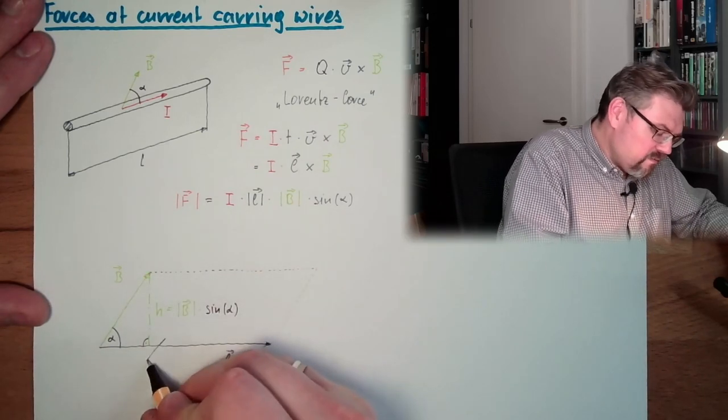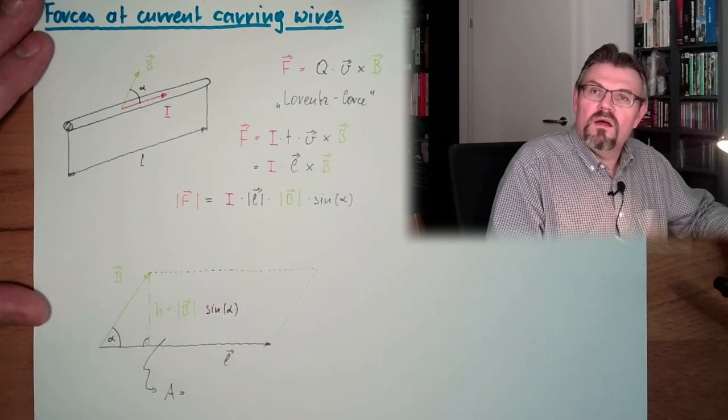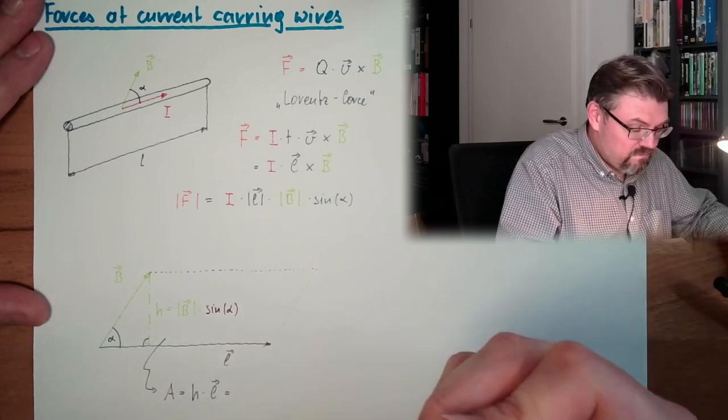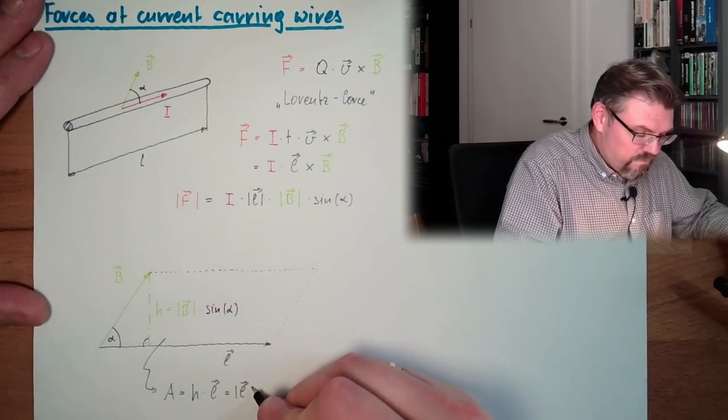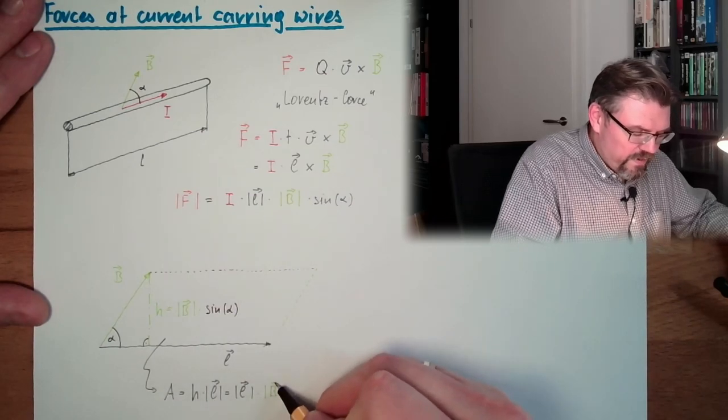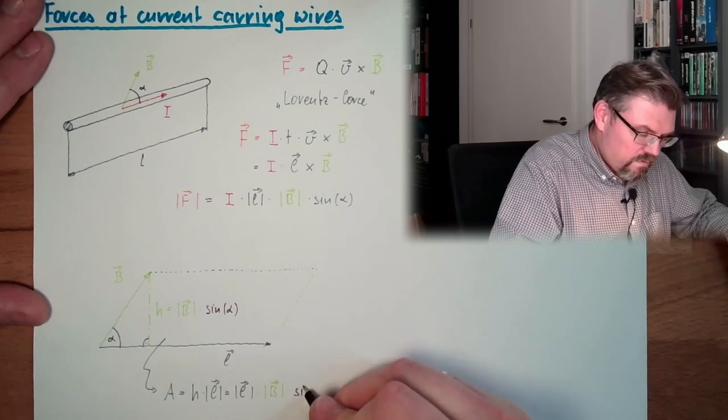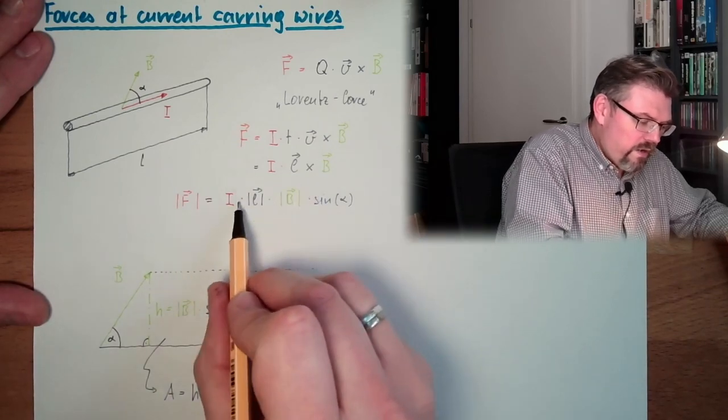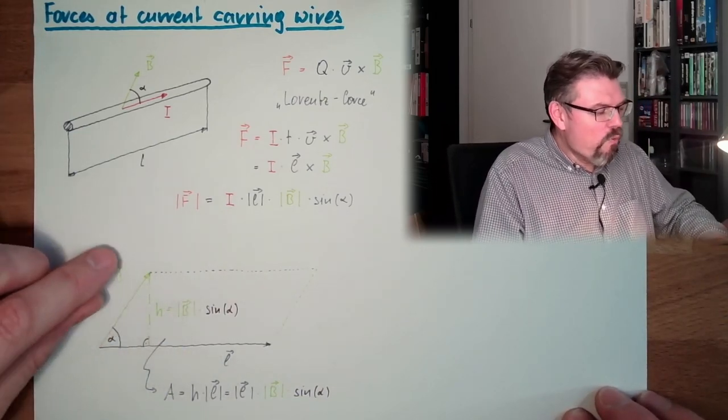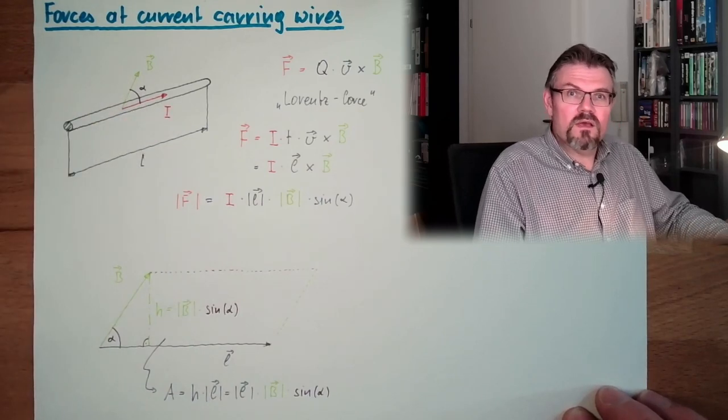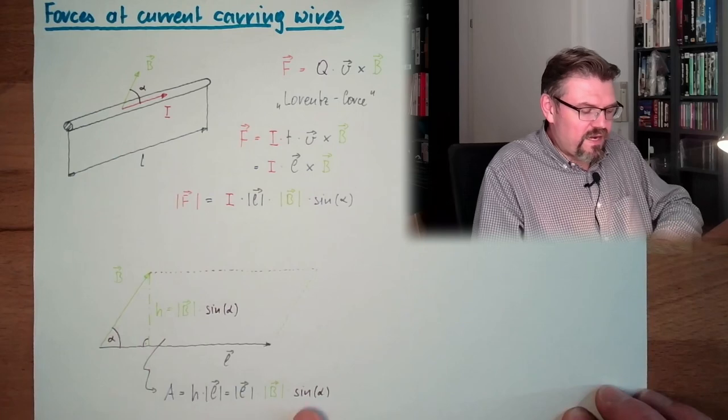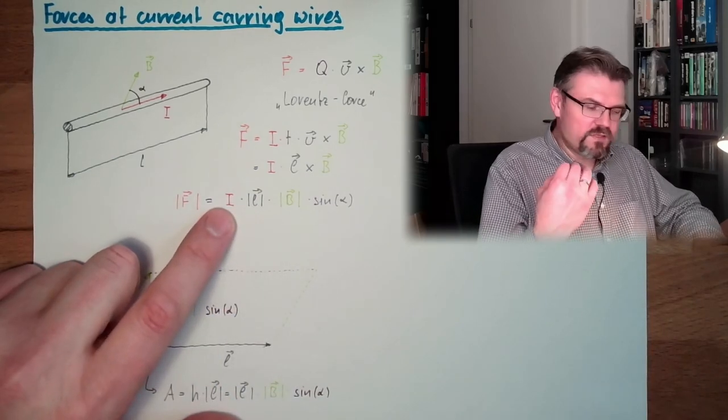So this is just true. And how long is this? This is the absolute value of L. So our area of our parallelogram is h multiplied by L. And this is L, actually it's the absolute value of L. And then we had h multiplied by the absolute value of B, multiplied by sine alpha. It's the same. It's just how you calculate the area of a parallelogram opened by those two vectors.